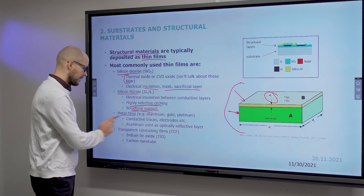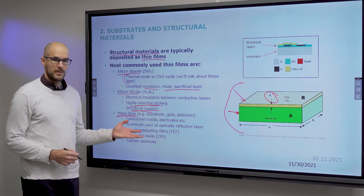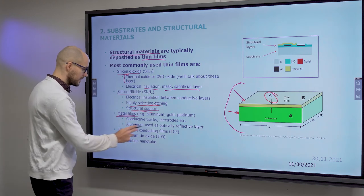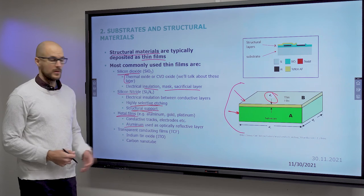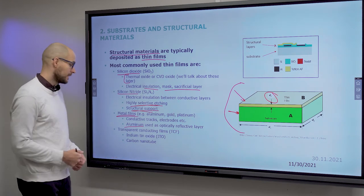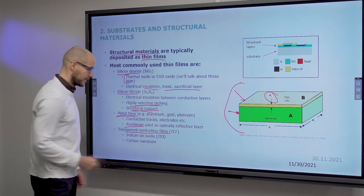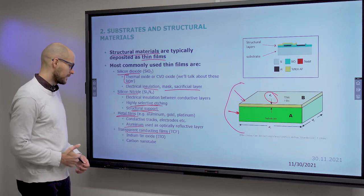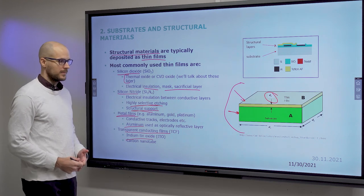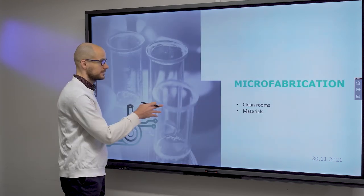Then metal films: Aluminium, gold, platinum. They are typically used for electrodes and for wiring. Aluminium can also be used as a mirror, basically as a highly reflective layer. Then there are also conductive films, transparent conductive films such as indium tin oxide, which conduct electricity but are transparent.